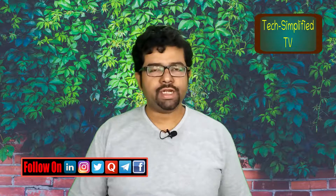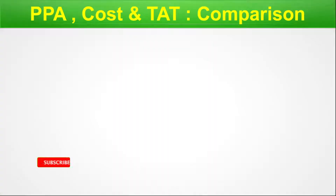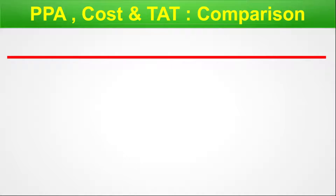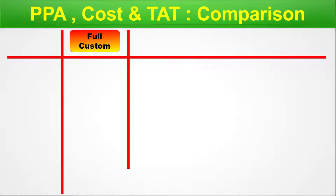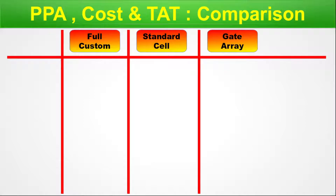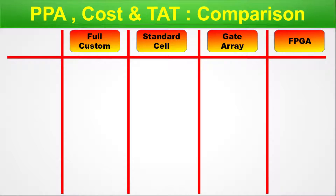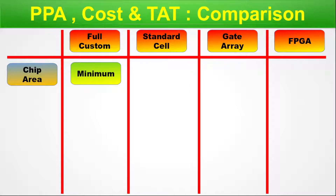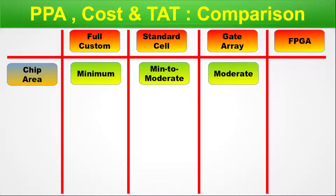Now, let us do comparative benchmarking from both an engineering and time-to-market point of view — comparing FPGA, cost, and turnaround time for all discussed types of ASICs. The columns are full custom, standard cell, gate array, and FPGA. First parameter: chip area. For full custom, it is minimum. For standard cell, it is minimum to moderate. For gate array, it is moderate. For FPGA, it is maximum. Second parameter: performance. Full custom has maximum performance. Standard cell has maximum to moderate. Gate array is moderate. FPGA is minimum.